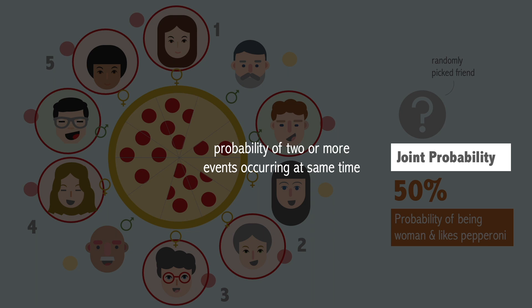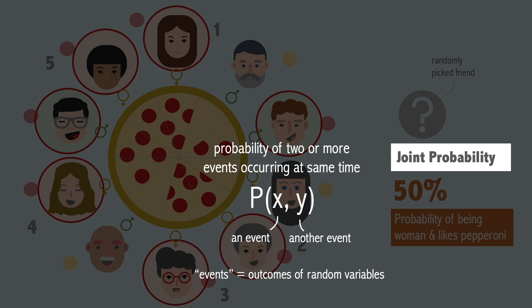Joint probability is where we want to find out the probability of two or more events occurring at the same time. The statistical notation for joint probability is p of x comma y, where x represents an event and y represents another event. We can think of an event as a possible outcome of a random variable.